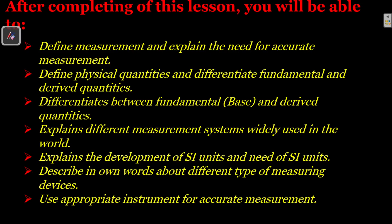By the end of this chapter, you will learn different types of measurements and different types of physical quantities like fundamental and derived quantities, their units and how the units are developed, what is the need of SI units, what are the different devices used to measure length, mass, and other physical quantities, and what is the appropriate instrument for accurate measurement.